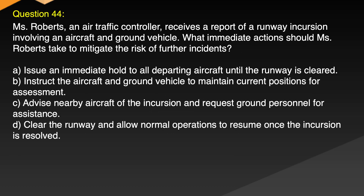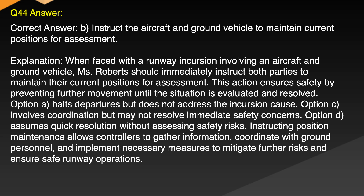Question 44. IMS Roberts, an air traffic controller, receives a report of a runway incursion involving an aircraft and ground vehicle. What immediate actions should IMS Roberts take to mitigate the risk of further incidents? A. Issue an immediate hold to all departing aircraft until the runway is cleared. B. Instruct the aircraft and ground vehicle to maintain current positions for assessment. C. Advise nearby aircraft of the incursion and request ground personnel for assistance. D. Clear the runway and allow normal operations to resume once the incursion is resolved. Correct answer: B. Instruct the aircraft and ground vehicle to maintain current positions for assessment.